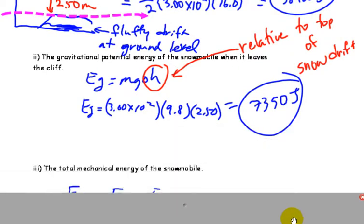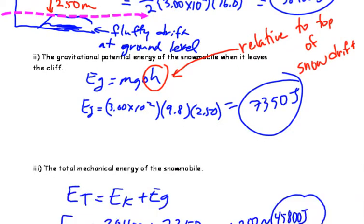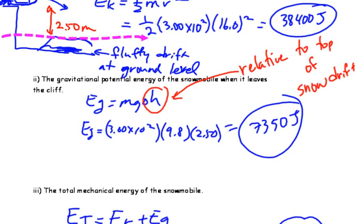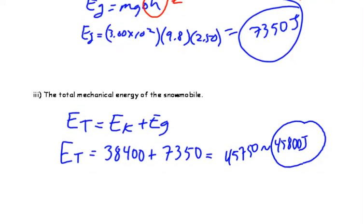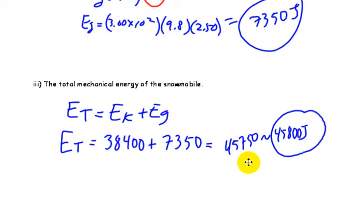Then, of course, you guessed it, the total mechanical energy. Simply adding these two numbers together, 38,400 plus 7,350, I get 45,750. We're rounding it off to three sig figs, 45,800 joules.